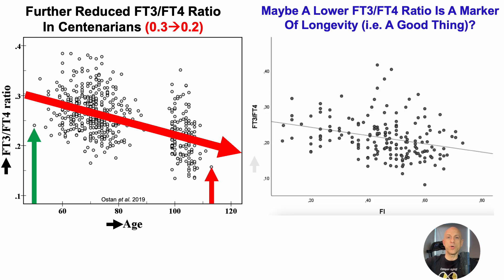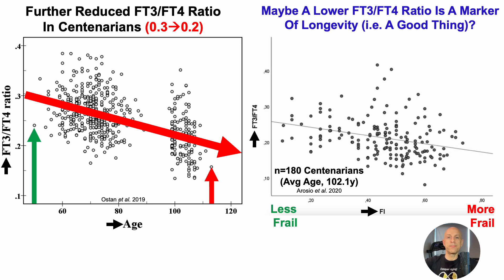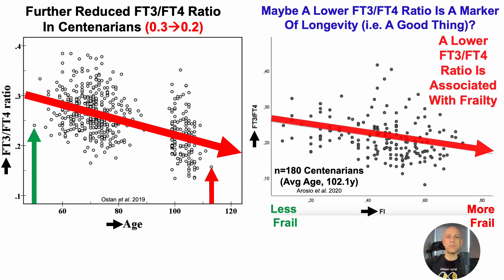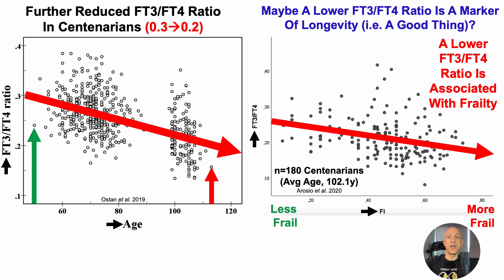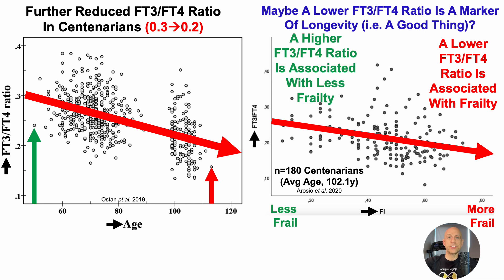But maybe not. The free T3 to free T4 ratio is plotted against a frailty index (Fi) in a study of 180 centenarians with an average age of 102 years. More frail is to the right on the x-axis. There is a significant inverse correlation: a lower ratio is associated with being more frail, and conversely, a higher ratio is associated with being less frail. That argues that a lower ratio may not be good for health.